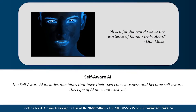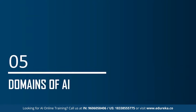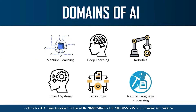Moving on to the last topic: the different domains or branches of artificial intelligence. AI can be used to solve real-world problems by implementing machine learning, deep learning, natural language processing, robotics, expert systems, and fuzzy logic. Recently, AI has also been applied in computer vision and image processing.